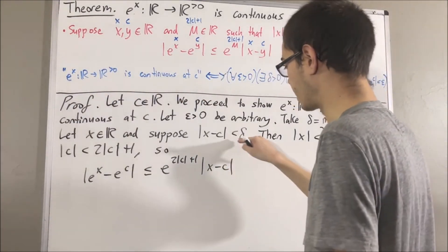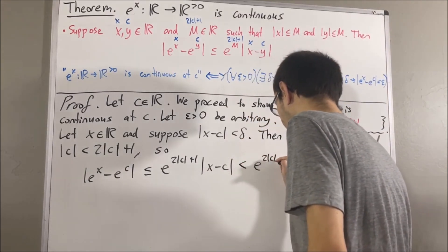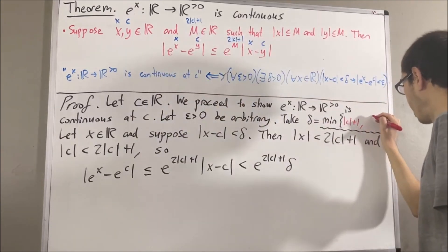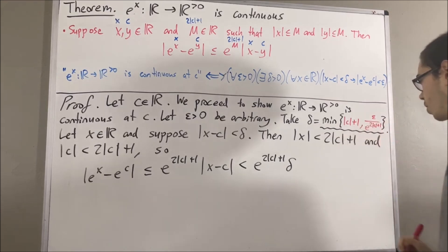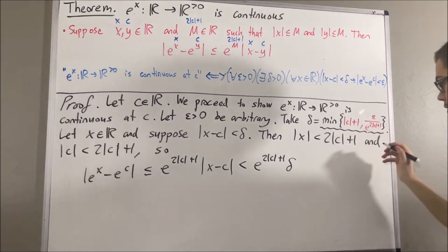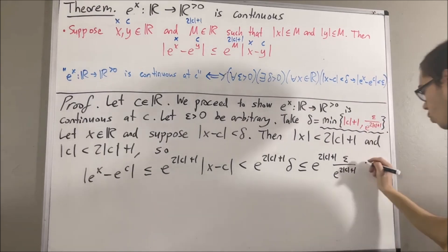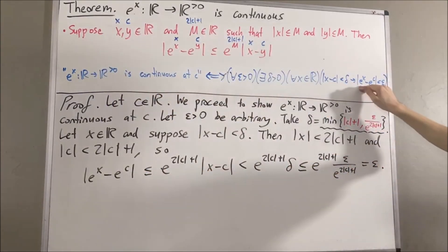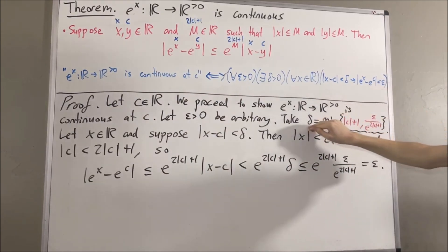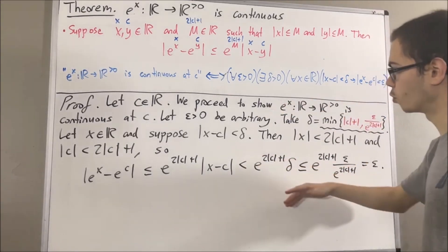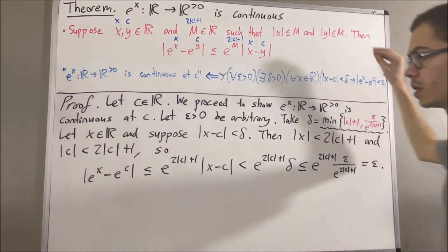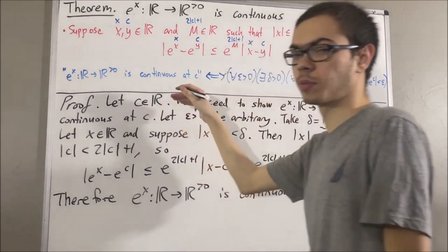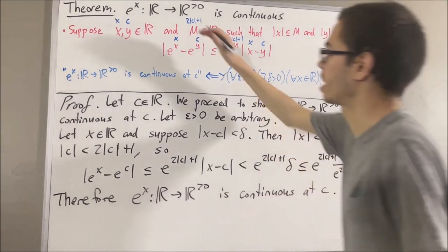We know that |x - c| < delta, so this term must be less than e^(2|c| + 1) times delta. Now, all we have to do is restrict delta so that delta is less than or equal to epsilon over e^(2|c| + 1). With delta ≤ epsilon / e^(2|c| + 1), we have that e^(2|c| + 1) times delta is less than or equal to epsilon. This shows that |e^x - e^c| < epsilon, which is exactly what we wanted to show. So with this choice of delta, the argument follows, and we have proven that this statement is true. We have shown that the exponential function is continuous at c, and since c was an arbitrary real number, this means we have shown that the exponential function is continuous everywhere.